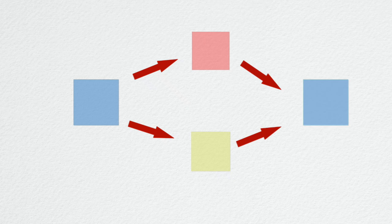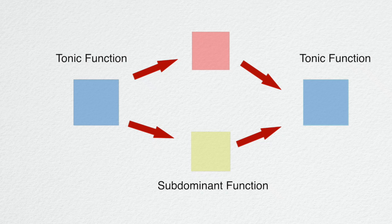Most tonal harmony, then, is a succession of moves between stability towards varying degrees of instability and then back again to stability. These three functions, which we call tonic function, that's stability, the subdominant function, that's instability, and the dominant function, strong instability, are the basic building blocks of music.